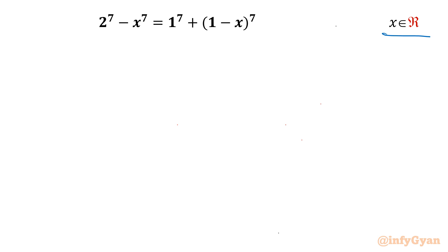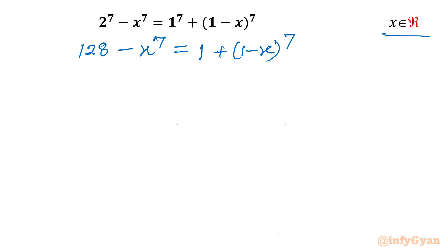Let's get started by writing 2^7 as 128 minus x^7 equal to 1 plus (1 minus x)^7. Now take variables to one side: x^7 plus (1 minus x)^7, and constants to the other side: 128 minus 1, so 127.